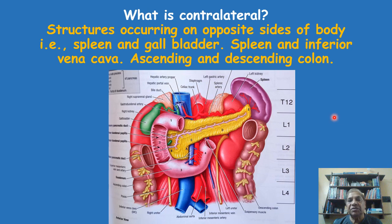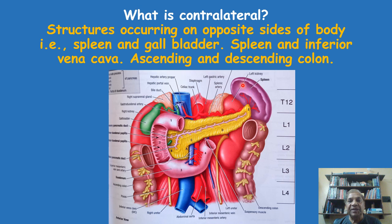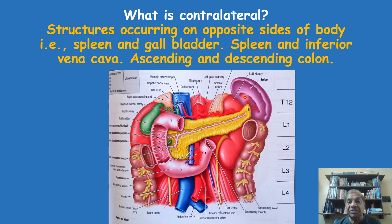Now let us go to the last term which confuses most students — contralateral. Here we learn about structures occurring on opposite sides of the body, meaning one is on the right side and another is on the left side of the median plane. For example, the spleen is a unilateral organ on the left side. When you compare the spleen with the gallbladder, which is also unilateral and occurs only on the right side, the gallbladder and spleen are contralateral — they occur on opposite sides of the median plane.